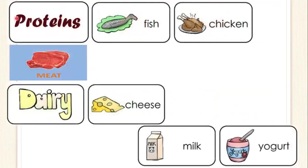Now we have the proteins. The proteins like fish, chicken, and meat. We have the fish, que son los pescados, the chicken and the meat. Aquí es exclusivamente la carne, carne de res.